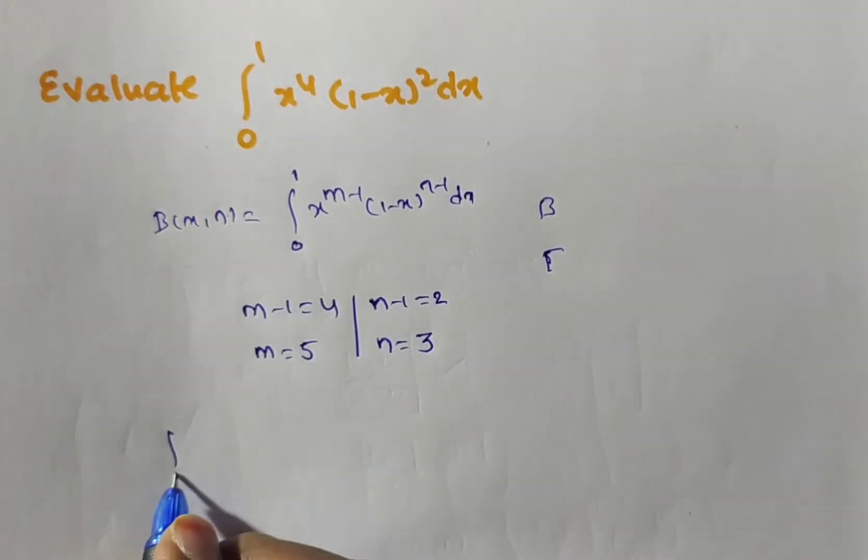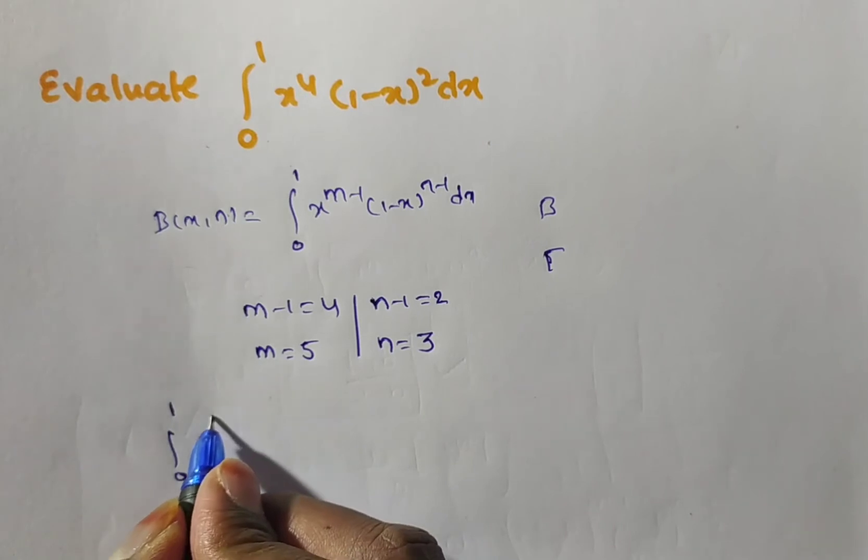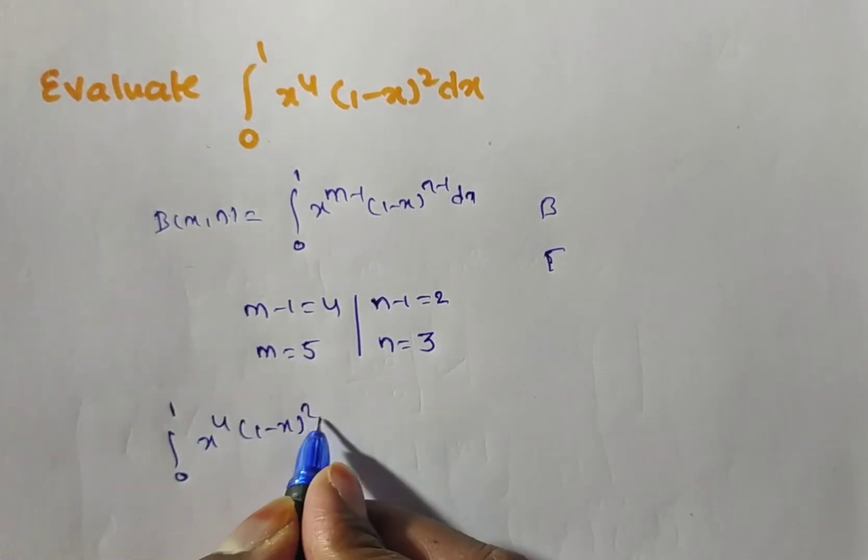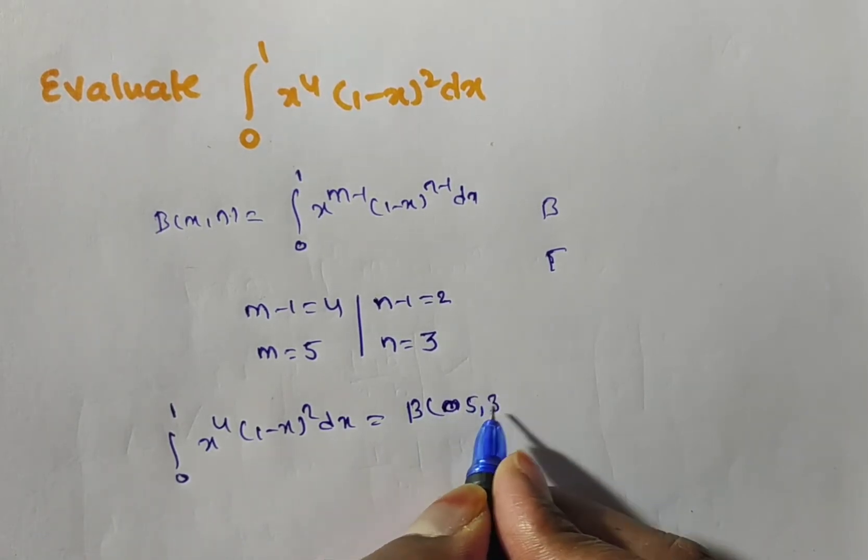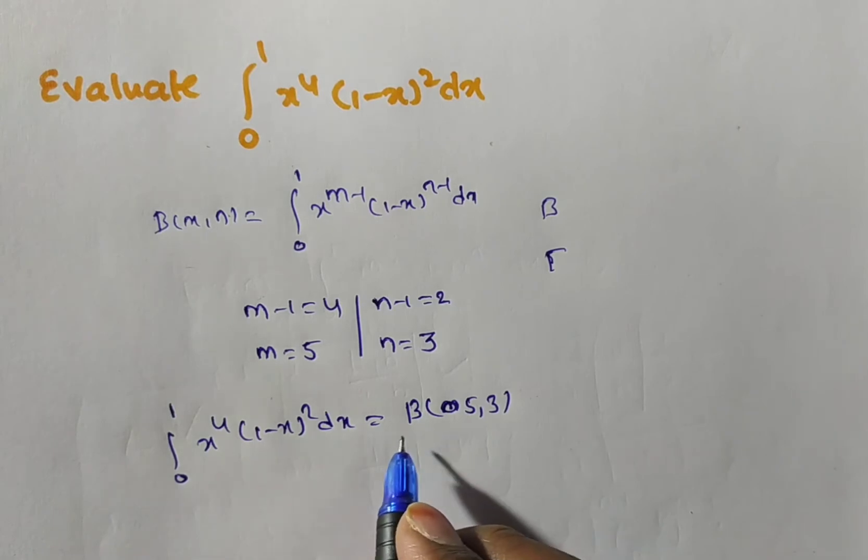Therefore, integral 0 to 1 x to the power of 4, 1 minus x all square dx is equal to beta of m comma n. Now, what is m here? Beta of 5 comma 3. Now, we have to evaluate this beta of 5 comma 3 also. How we can evaluate?